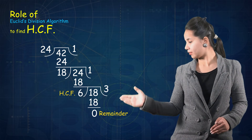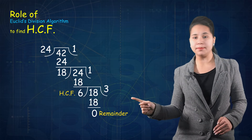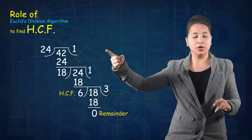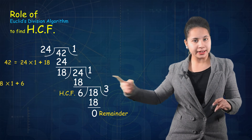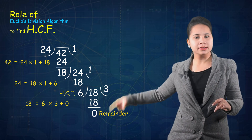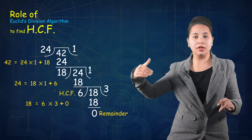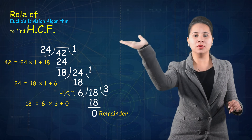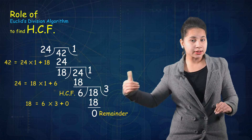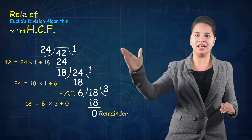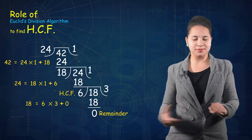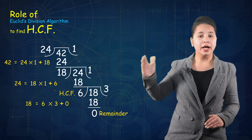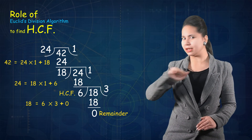Now observe one thing here. At each and every step, the Euclid division lemma is satisfied. See — in the first step, the lemma is applied; in the second step, the lemma is applied; and in the third step also, the lemma is applied. A set of well-defined steps is known as an algorithm, and that's why Euclid division lemma is satisfied in each step, and the Euclid division algorithm is completed here.